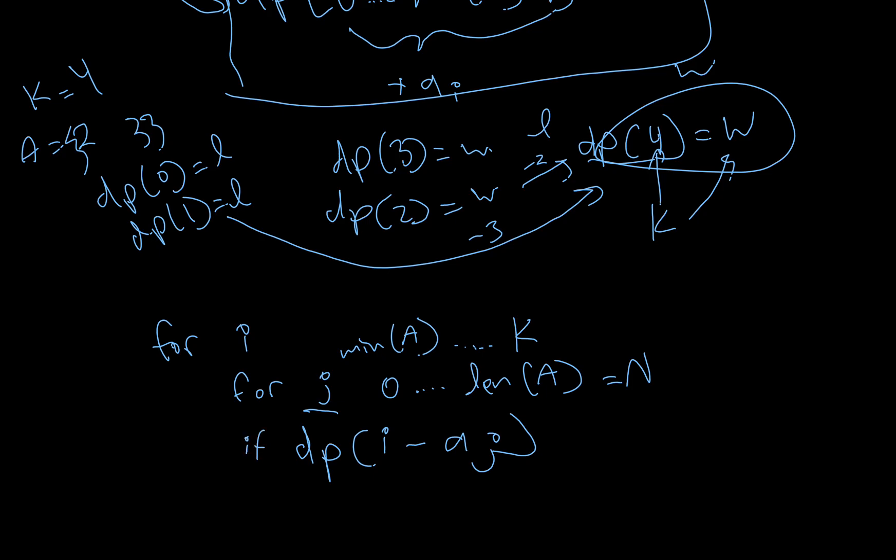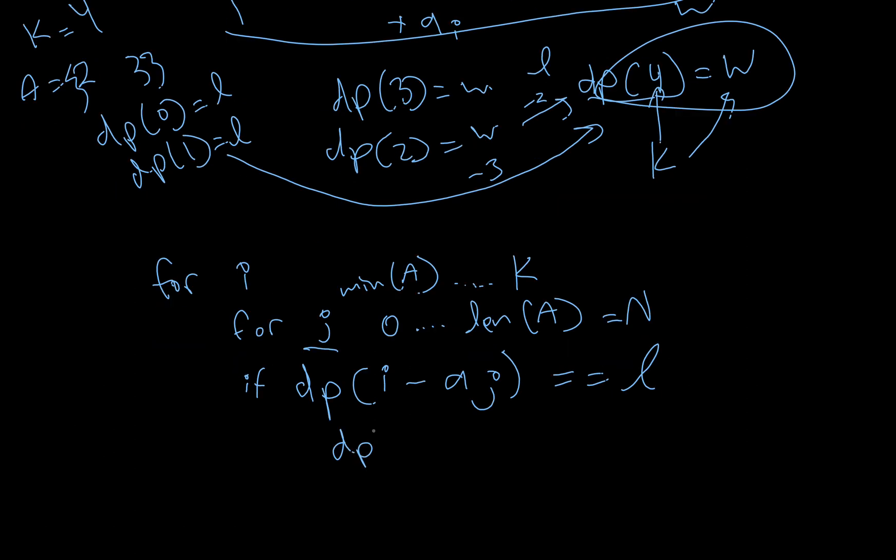DP of I minus A of J is lose. So, if this is a lose, and that means, if you subtract this many, if you subtract from this pile, you're handing your opponent a loss, so obviously, that would mean you win. So then, you can say, DP I is equal to win, because if you take away A_j from that, you get a win.